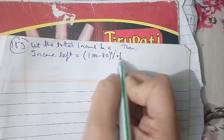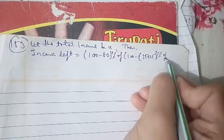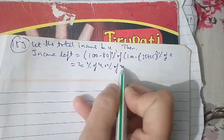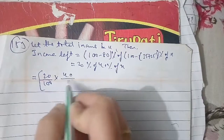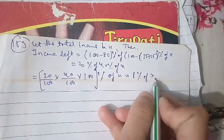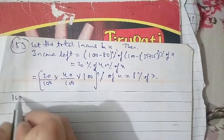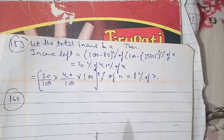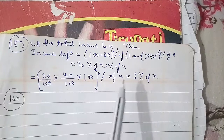Question 160: From the salary of an officer, 10% is deducted as house rent; 20% of the rest he spends on conveyance; 20% of the rest he pays as income tax; and 10% of the balance he spends on clothes. He is then left with rupees 15,552. Find the total salary. Options: rupees 25,000; 30,000; 35,000; and 40,000. This was asked in LIC AAO examination.